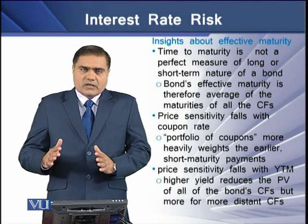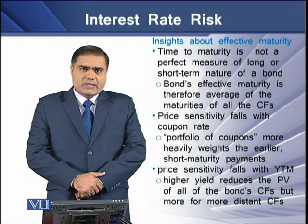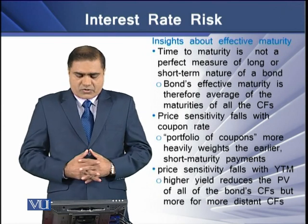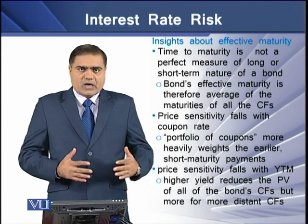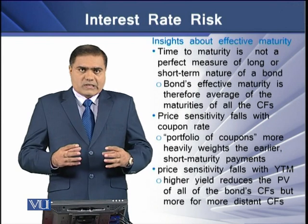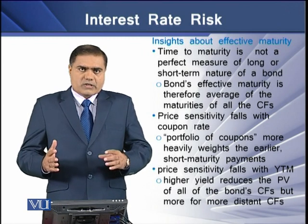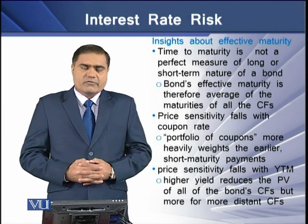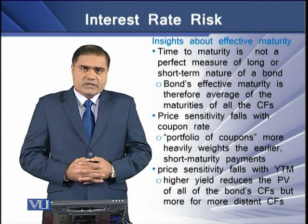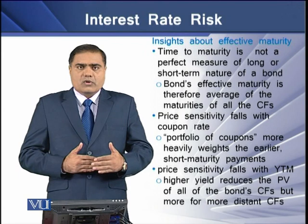These results give insight about effective maturity. Time to maturity is not a perfect measure of the long or short-term nature of a bond, because a bond's effective maturity is the average of the maturities of all cash flows related to the bond. Price sensitivity falls with the coupon rate: a portfolio of coupons — the collection of coupon payments made over the life of the bond — more heavily weights the earlier, shorter-term maturities. Price sensitivity also falls with YTM, meaning higher yield reduces the present value of all bond cash flows, but more so for the more distant cash flows.